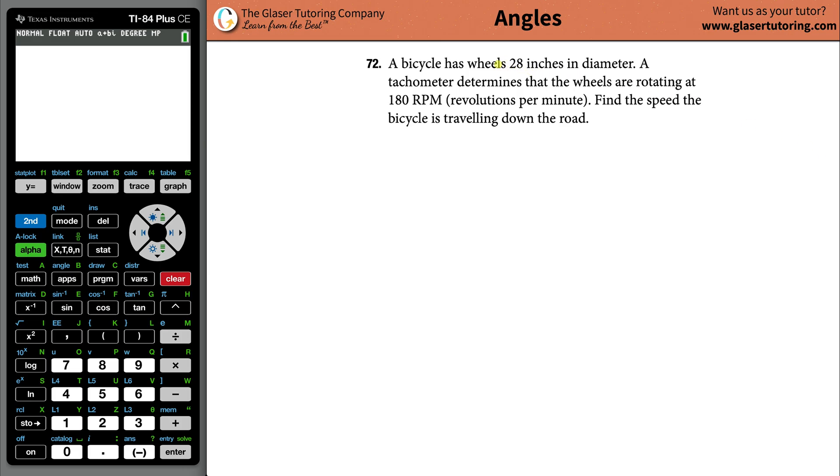Number 72: A bicycle has wheels 28 inches in diameter. A tachometer determines that the wheels are rotating at 180 revolutions per minute. Find the speed - in other words, the linear speed the bicycle is traveling down the road.